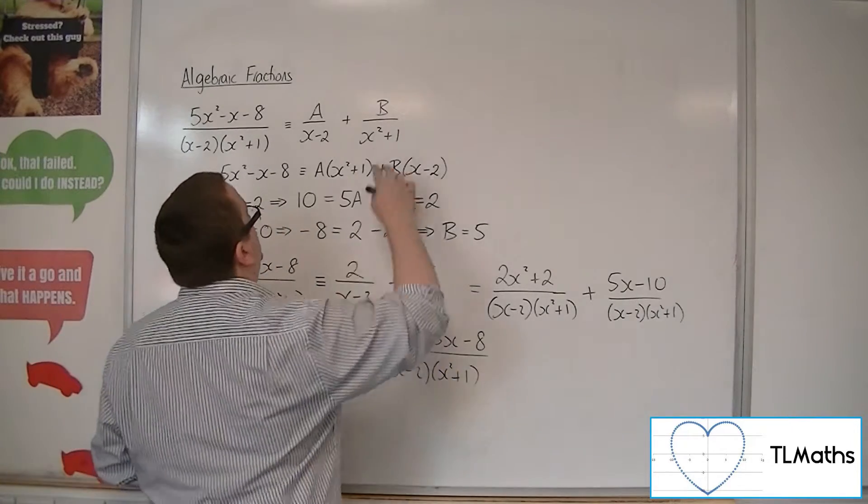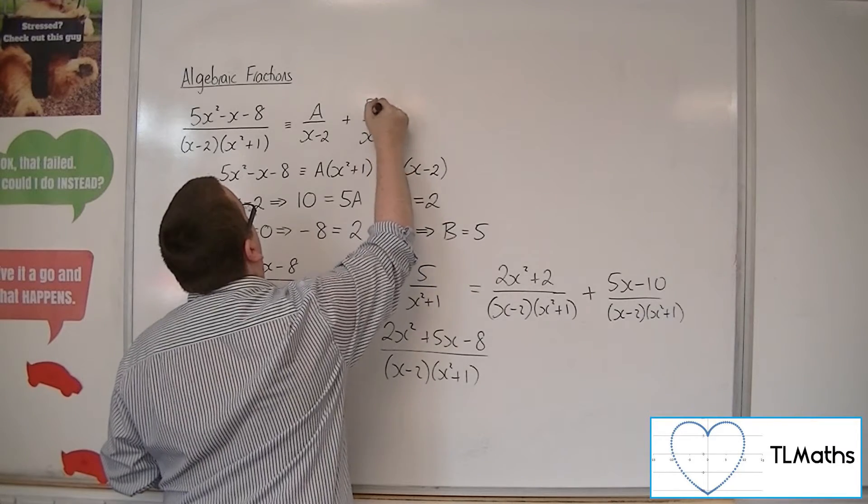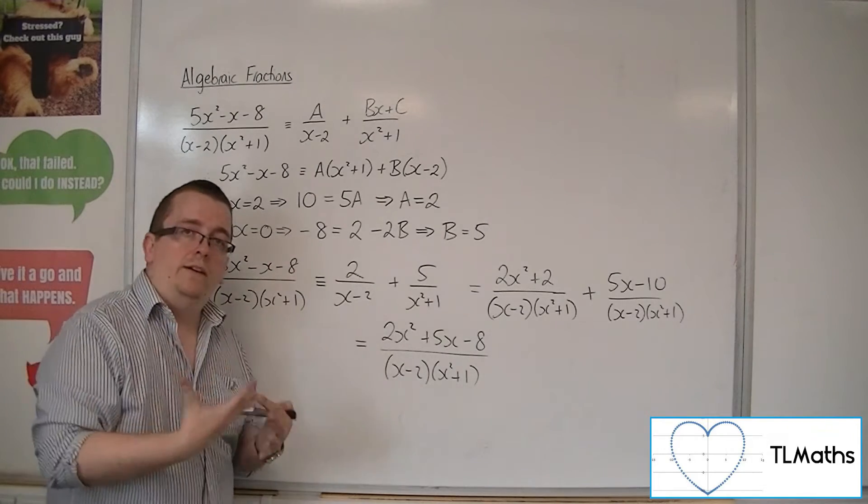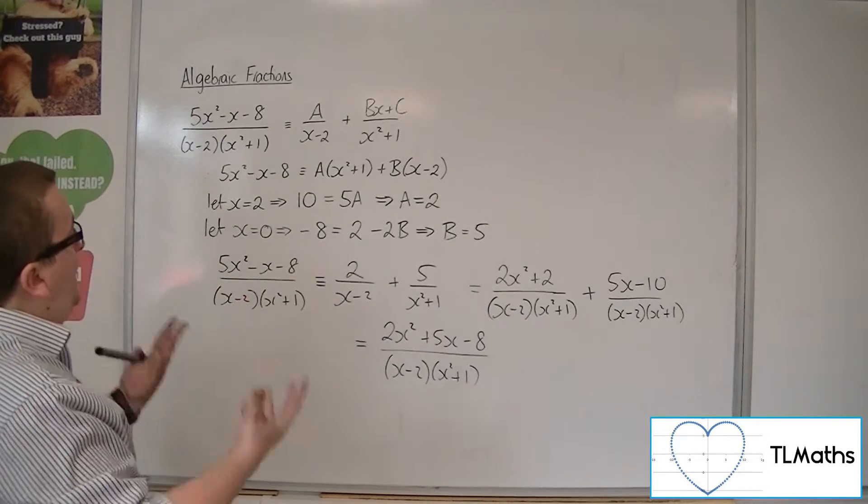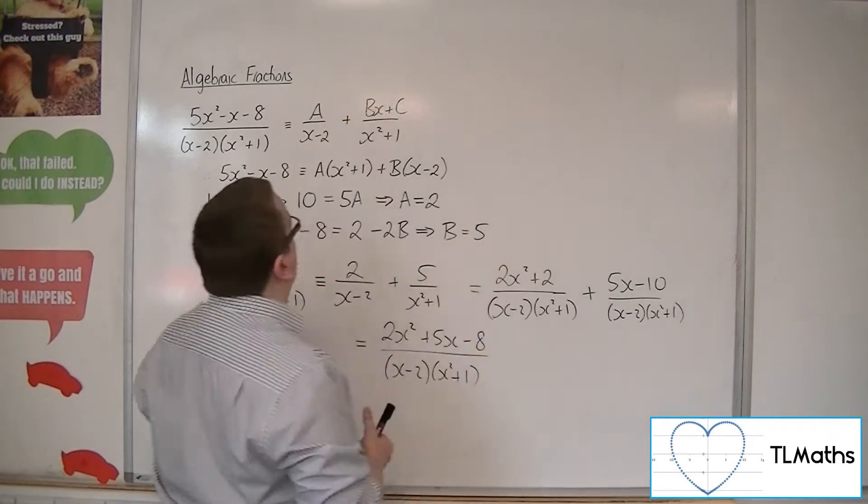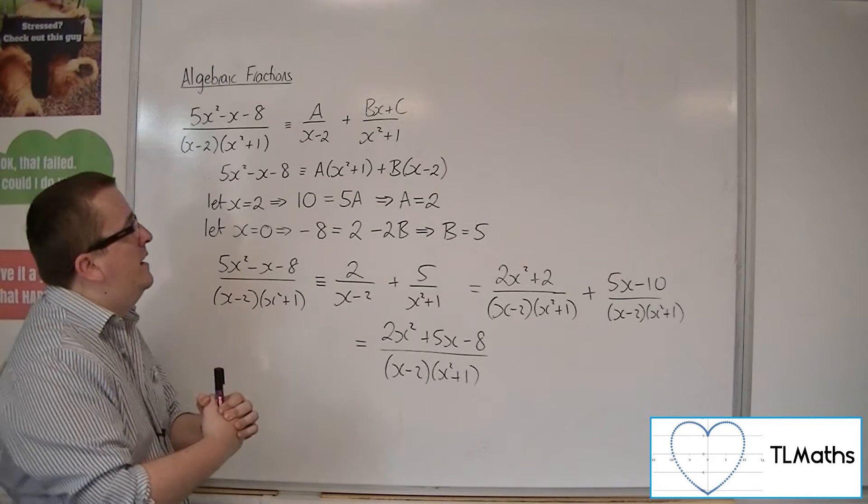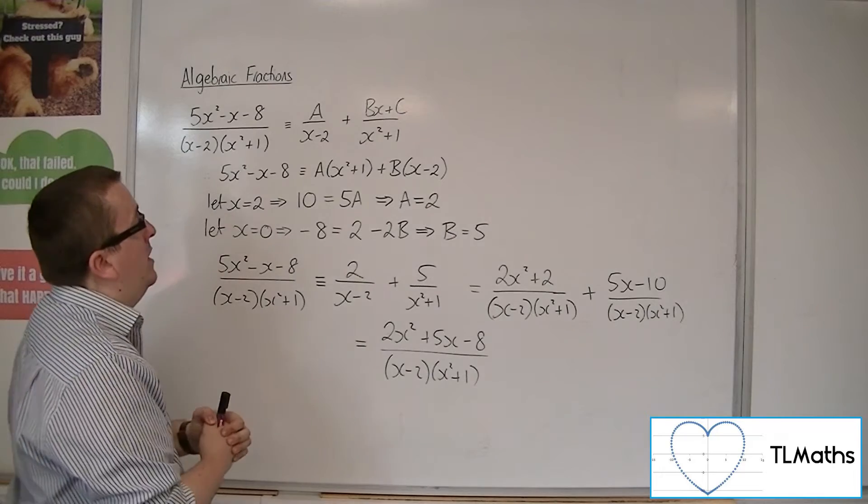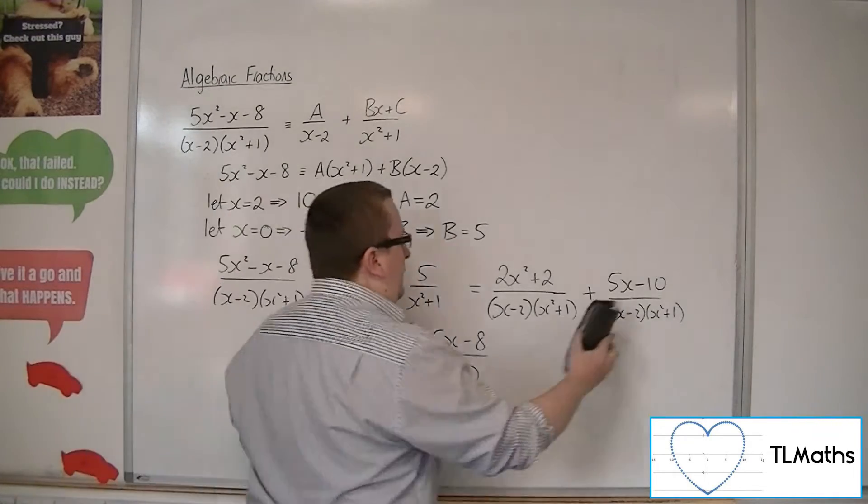So we could have a linear term. And so really what we should have done is explored the possibility of the numerator being something like Bx plus C, a linear term. Because there is a potential that B could turn out to be 0, in which case we return to the situation from before, so that could still work, but it could have the linear term there, the Bx. So B doesn't have to necessarily be 0.